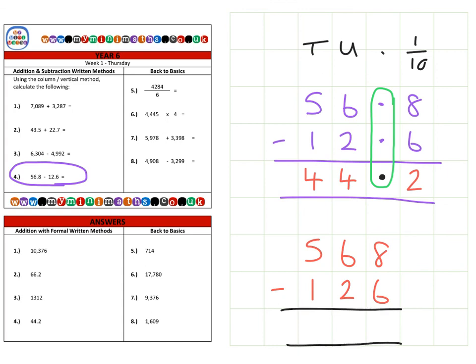First of all eight subtract six gives us two, six units subtract two units is four, 500 minus 100 is 400. So here we can clearly see we have the 442 here, the 442, but the only difference is we have this decimal point in it.